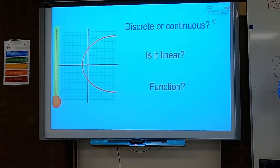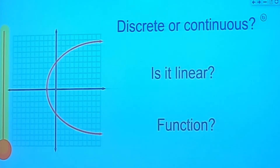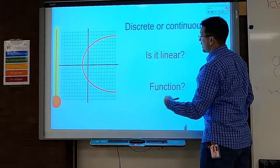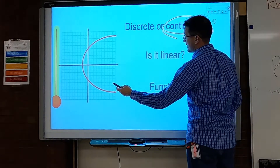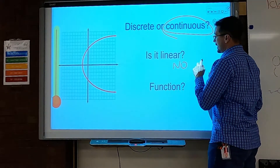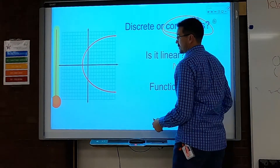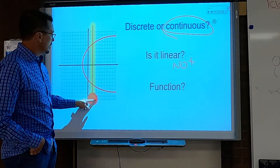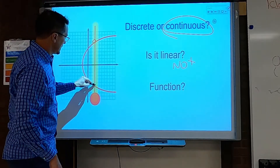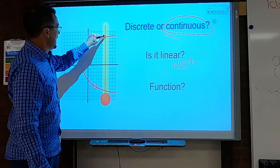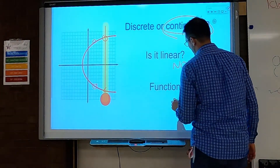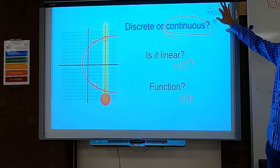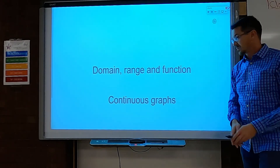And finally, this one — quickly try it and hit pause. Discrete or continuous? It's a solid line, so continuous. Is it linear? Definitely not. Is it a function? Doing the vertical line test, as I go across I notice that there are two y-values for each x-value, so this is not a function.